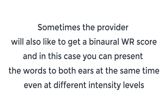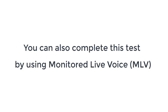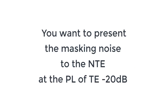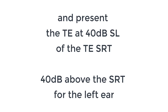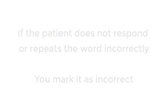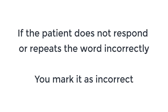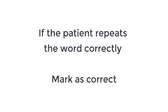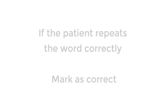Sometimes the provider will also like to get a binaural word recognition score — in this case you can present the words to both ears at the same time, even at different intensity levels. You can also complete this test using monitored live voice. If word recognition masking is needed, present the masking noise to the non-test ear at the presentation level of the test ear minus 20 decibels, and present the test ear at 40 dB SL of the test ear SRT. If the patient does not respond or repeats the word incorrectly, mark it as incorrect; if correct, mark as correct. Repeat until at least 25 words are presented to each ear.